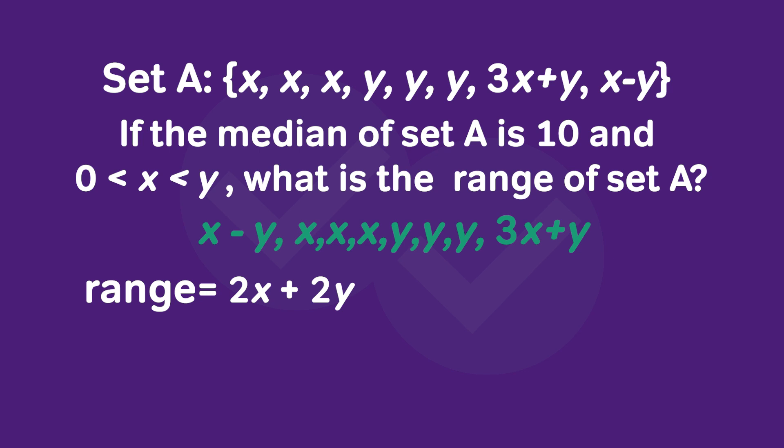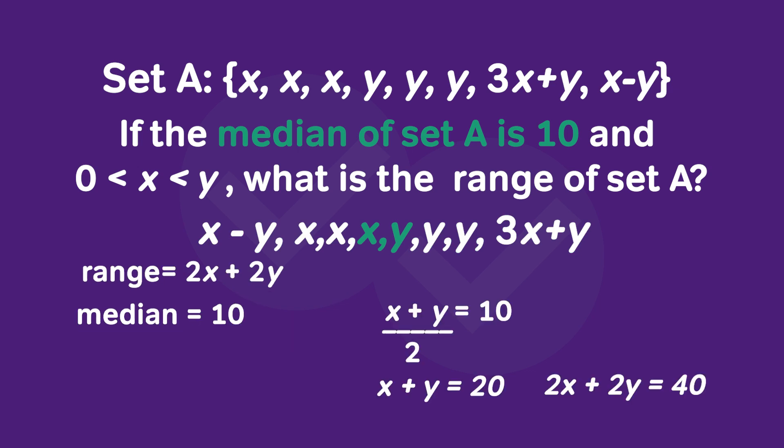To do this, we should use the piece of information that tells us that the median of set A is 10. Now since set A has an even number of values, the median will be the average of these two middle values. So the median will be x plus y divided by 2, and this we are told is equal to 10.